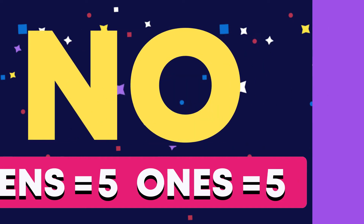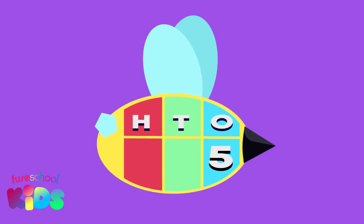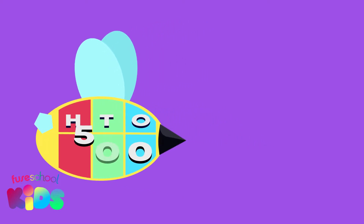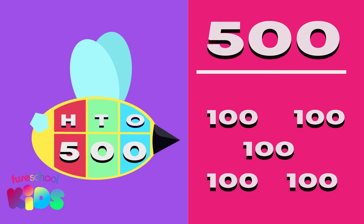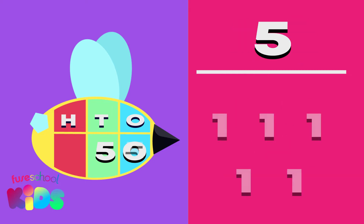No, they do not. Well done for guessing correctly. The 5 in the ones place equals 5 ones. The 5 in the tens place equals 5 tens — 5 tens is 50. The value of the digits depends on where it is in a number. 5 in the hundreds place would be worth 500. 5 in the tens place equals 5 tens, or 50. 5 in the ones place is worth 5 ones.